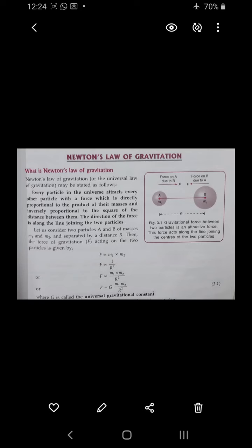Suppose object A is here and object B is here, both have mass M1 and M2. It means F is proportional to M1 times M2 because it is directly proportional to the product of their masses and inversely proportional to the square of the distance. Distance is R, which is between both particles.